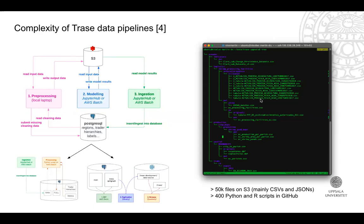The real focus of the thesis is the complexity of their pipelines. They have all their source data stored in an object store in Amazon S3. They do all the preprocessing, save files again, then model, then do further database processing, and save again things used for preprocessing. Very soon it becomes very entangled — spaghetti-like pipelines. Looking into the object store, you see deeply nested files, around 50,000 files, mostly CSVs and JSONs, often with inconsistent delimiters or other problems, managed through around 400 Python and R scripts.